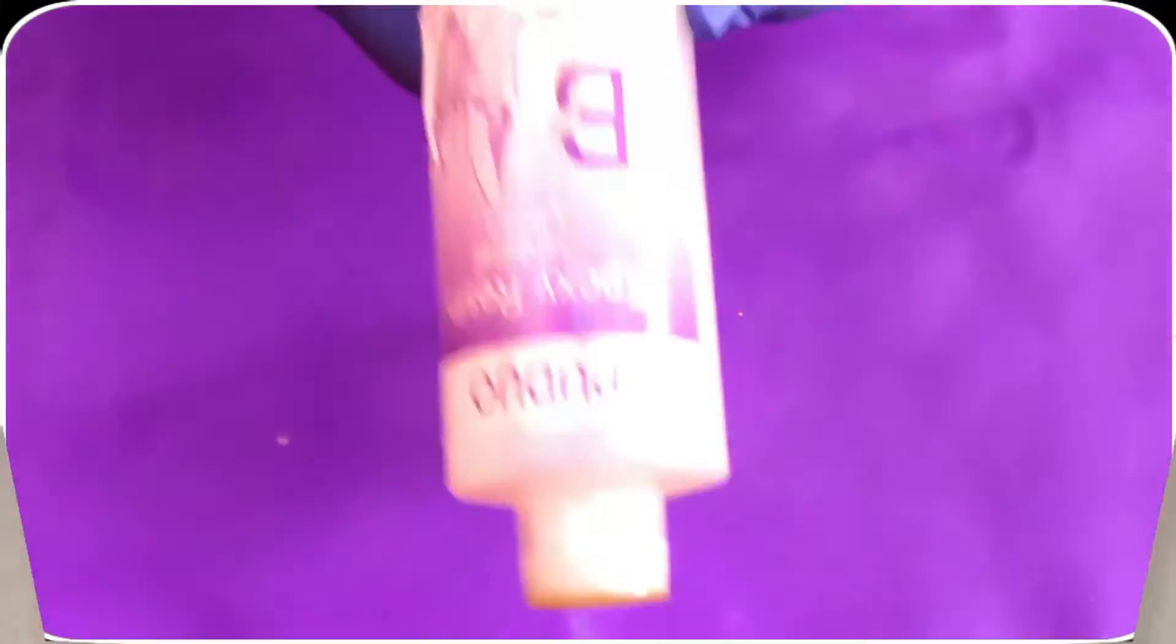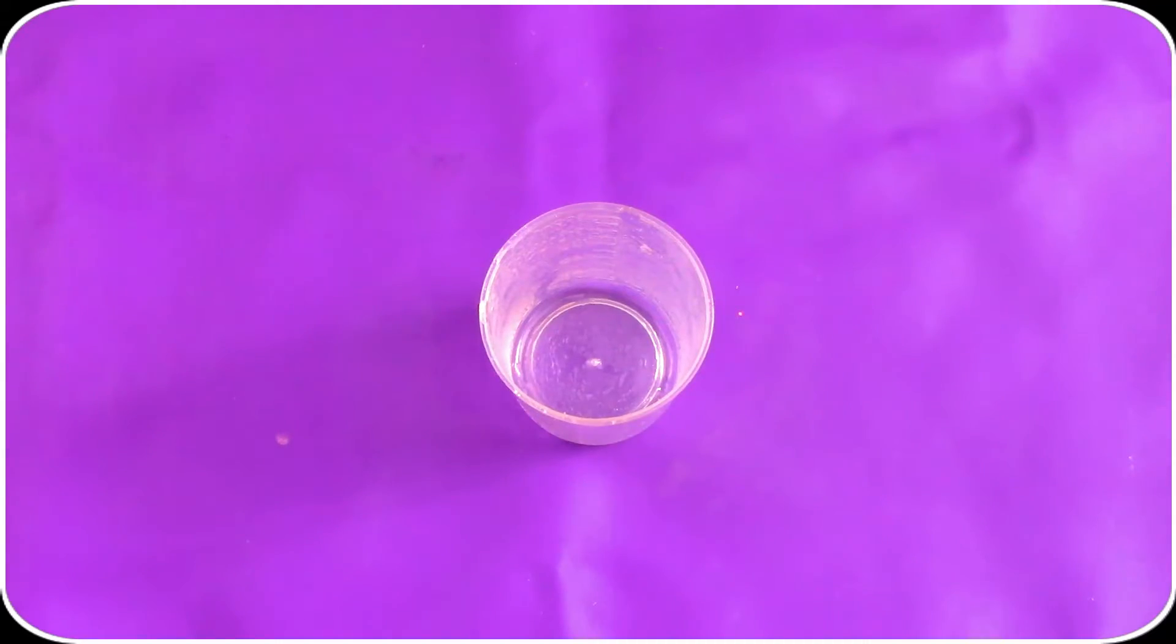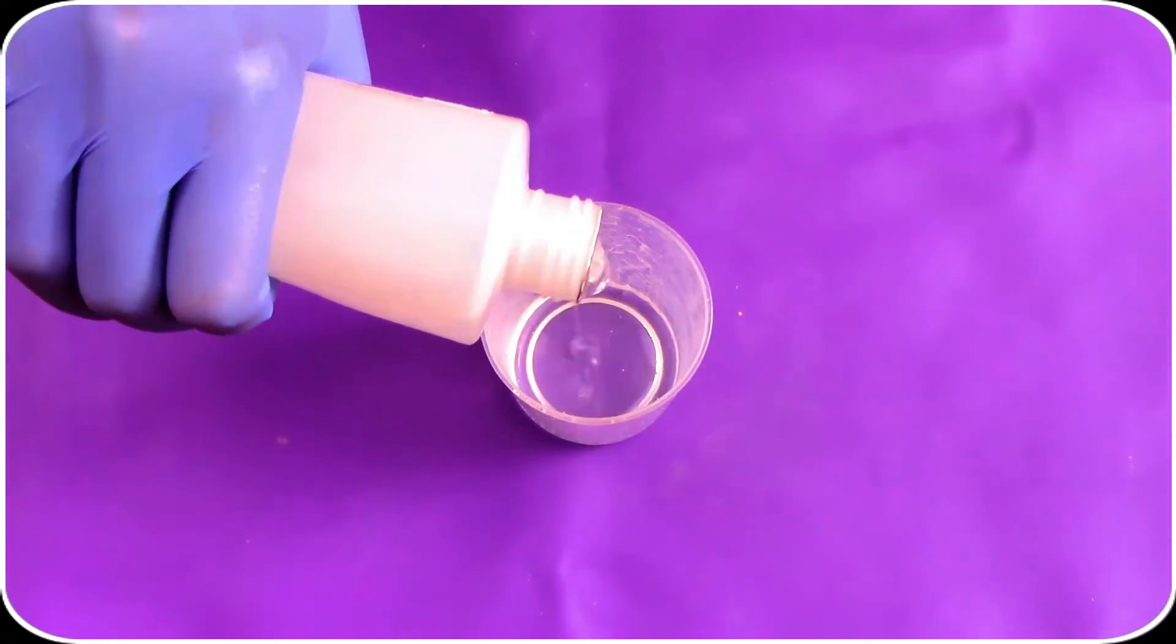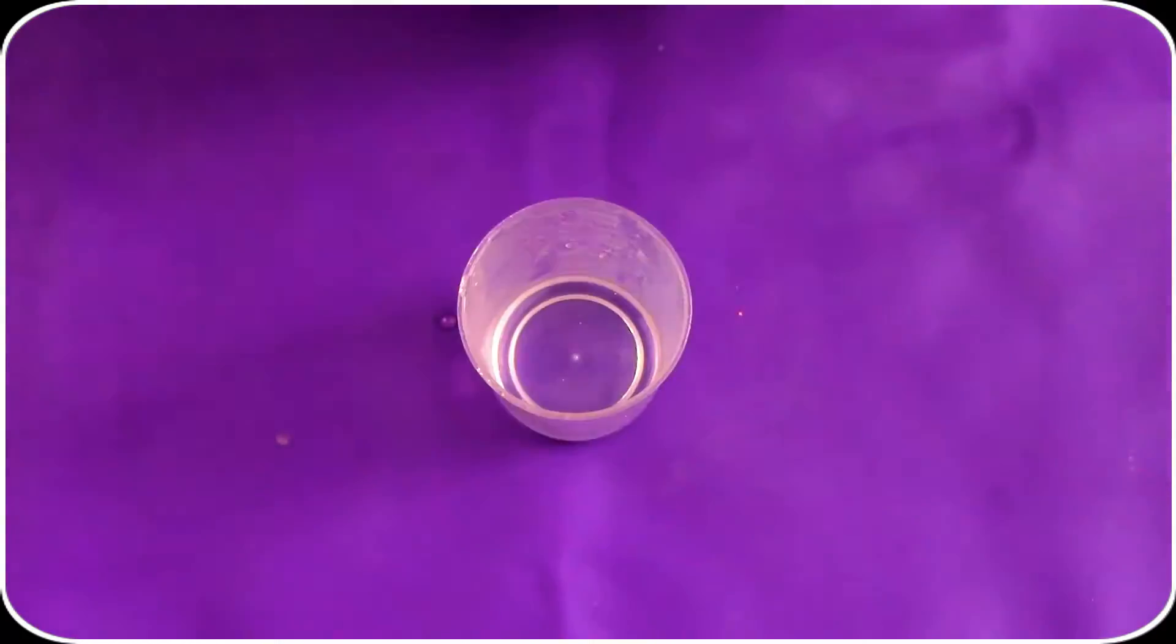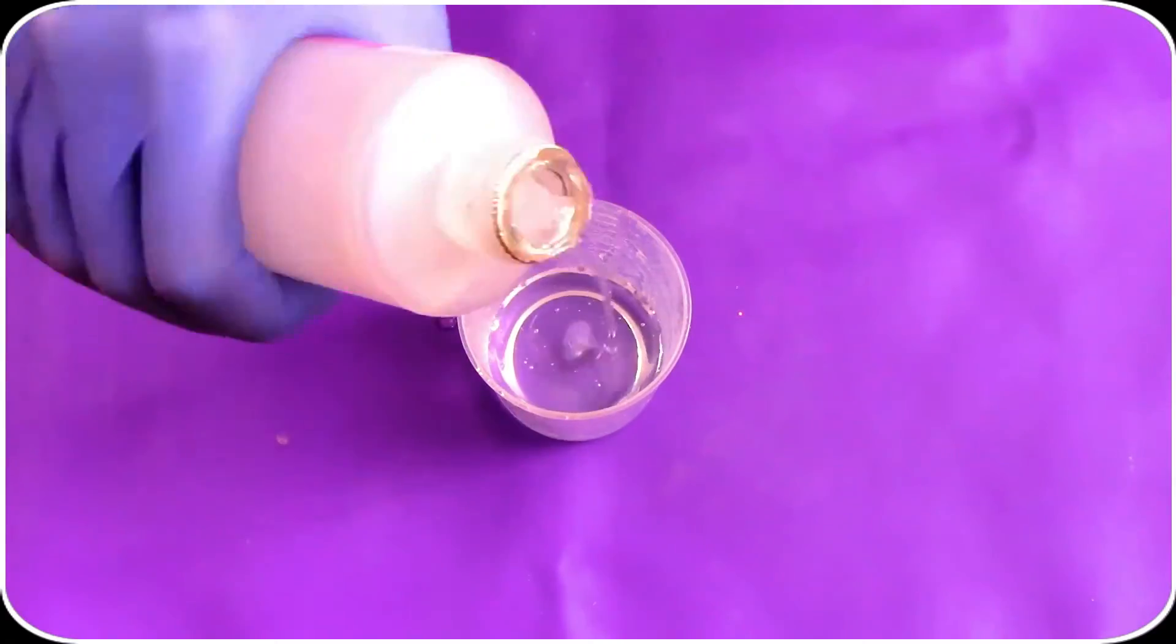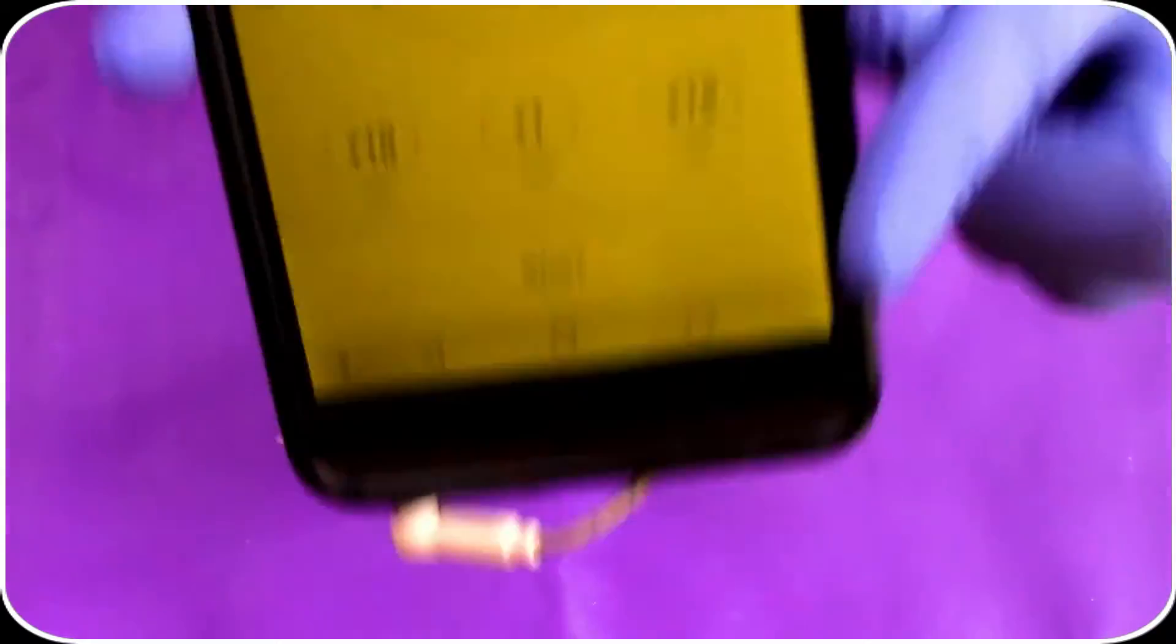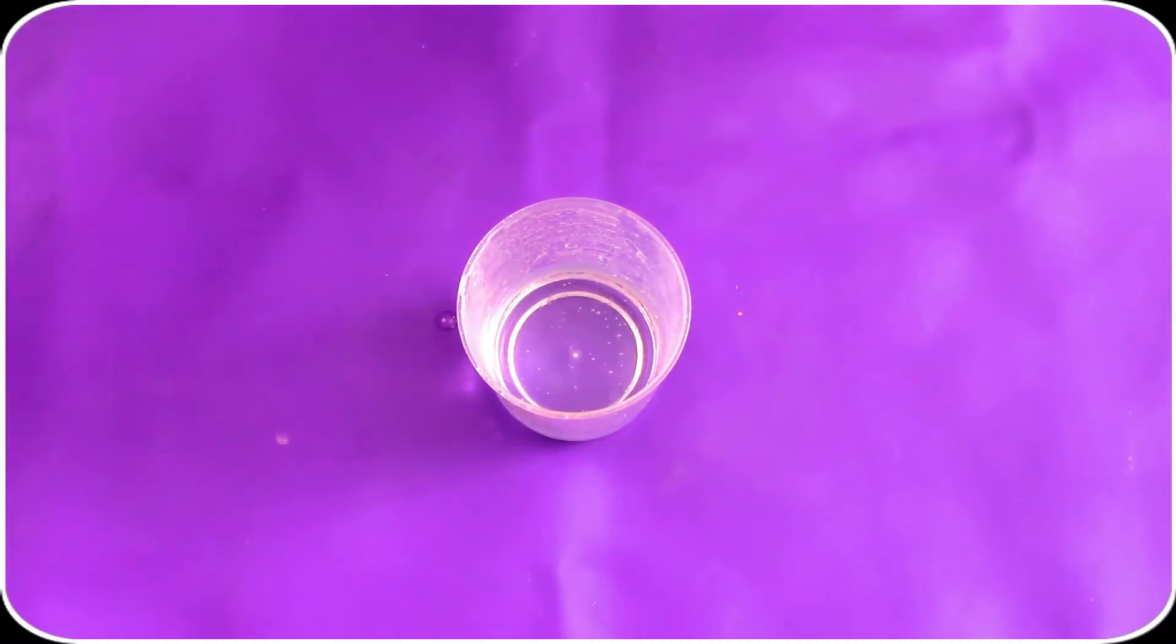The first step is to grab your hardener and pour one part into your mixing container. Then grab your resin this time and pour one equal part into the same mixing container. Grab that 3 minute timer and press start. Now while you mix this for 3 minutes make sure to scrape the sides and bottom to integrate everything properly, and to mix slowly to avoid any excess bubbles.